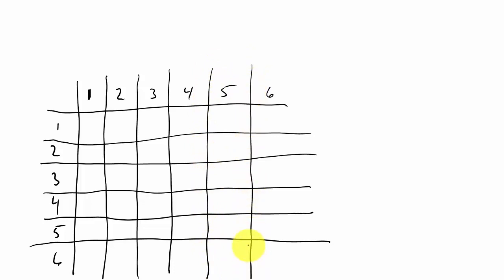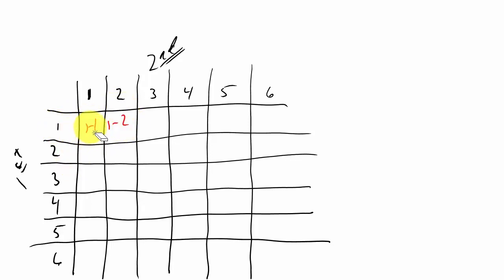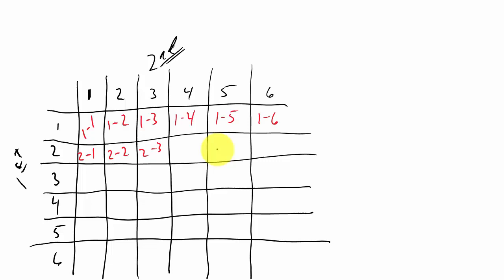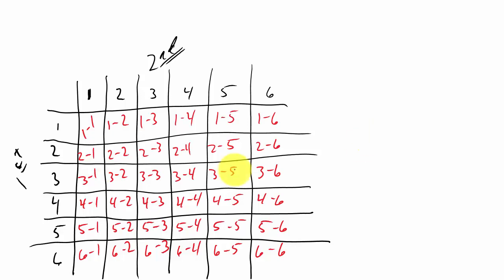We'll call this the first die and this one the second die. So you can see I can get a 1 and a 1, a 1 and a 2, a 1 and a 3, a 1 and a 4, a 1 and a 5, a 1 and a 6, then a 2 and a 1, a 2 and a 2, a 2 and a 3. I'm going to pause the video and finish filling out the table.